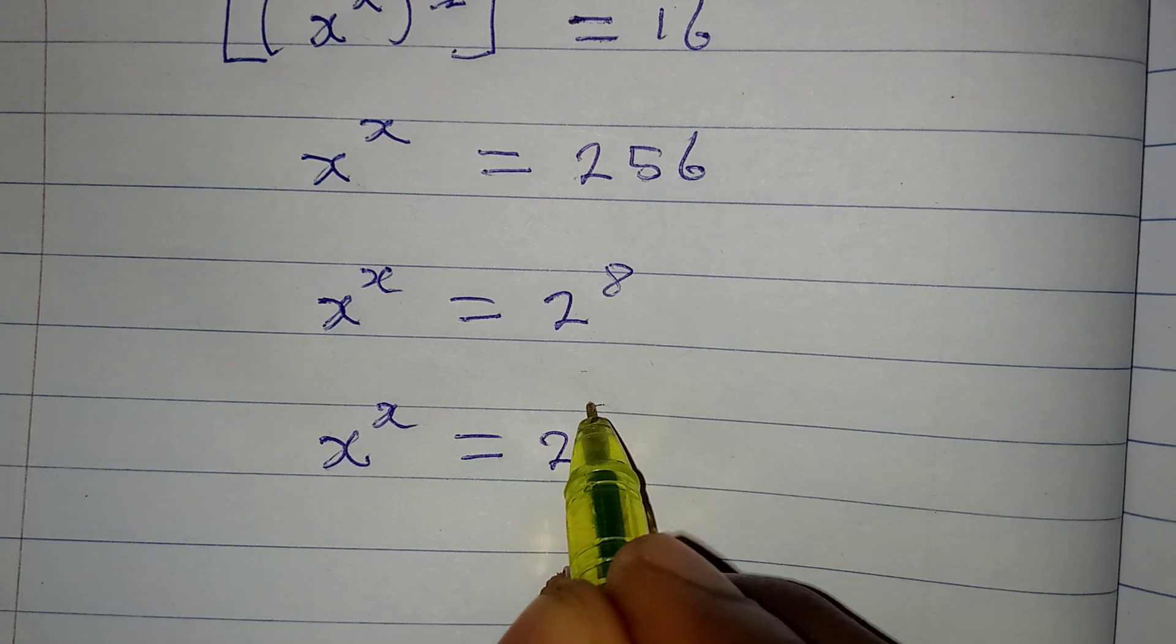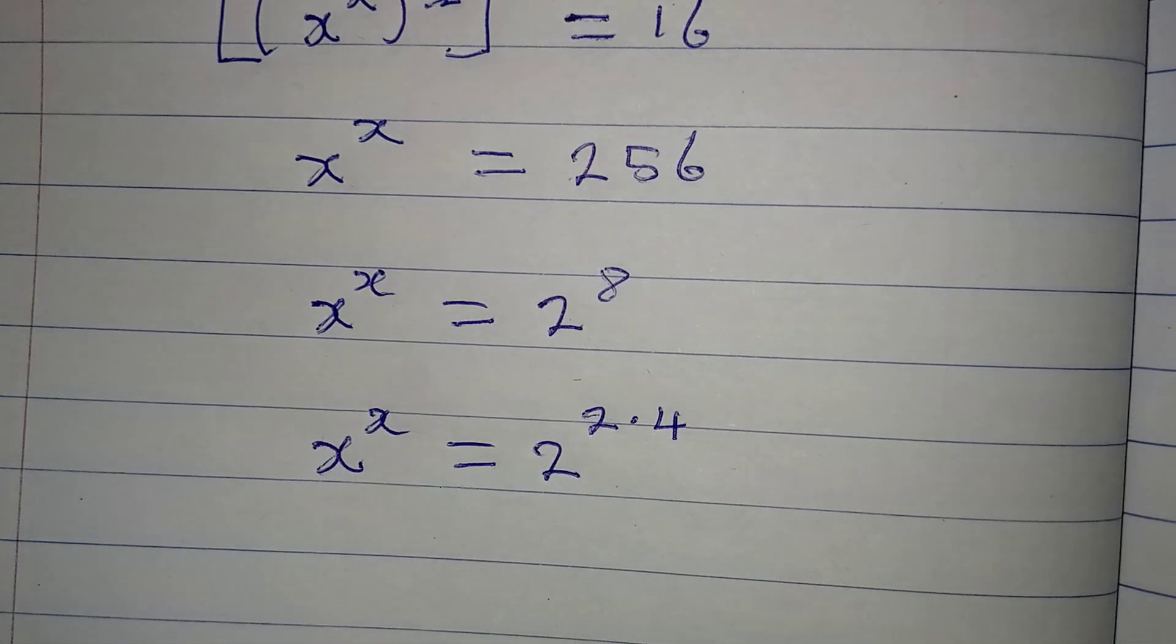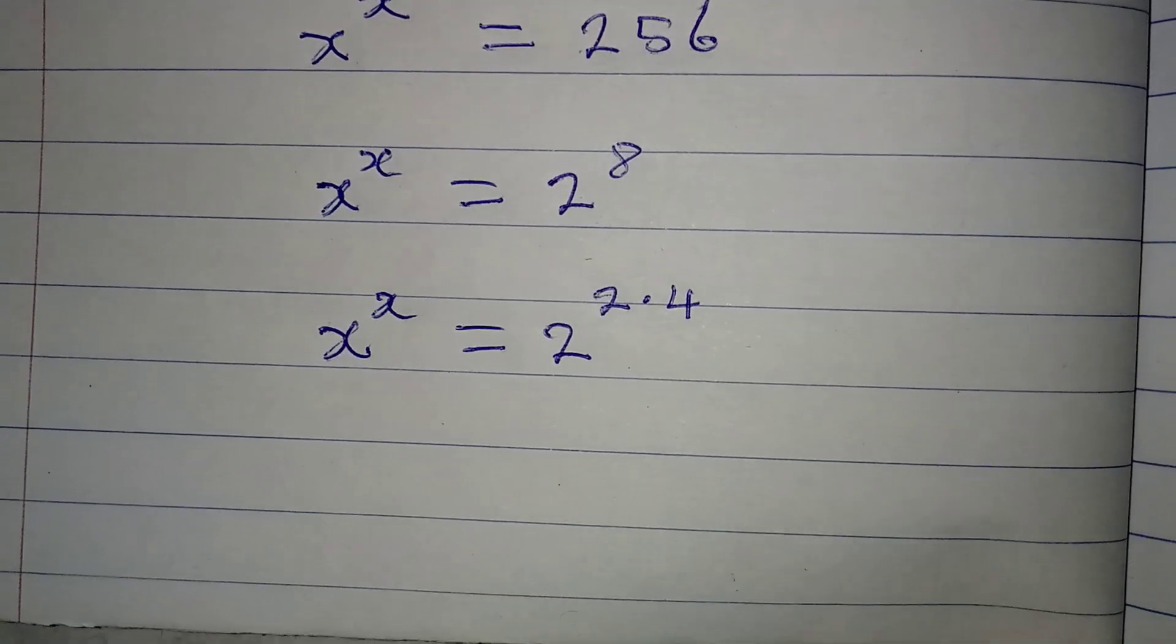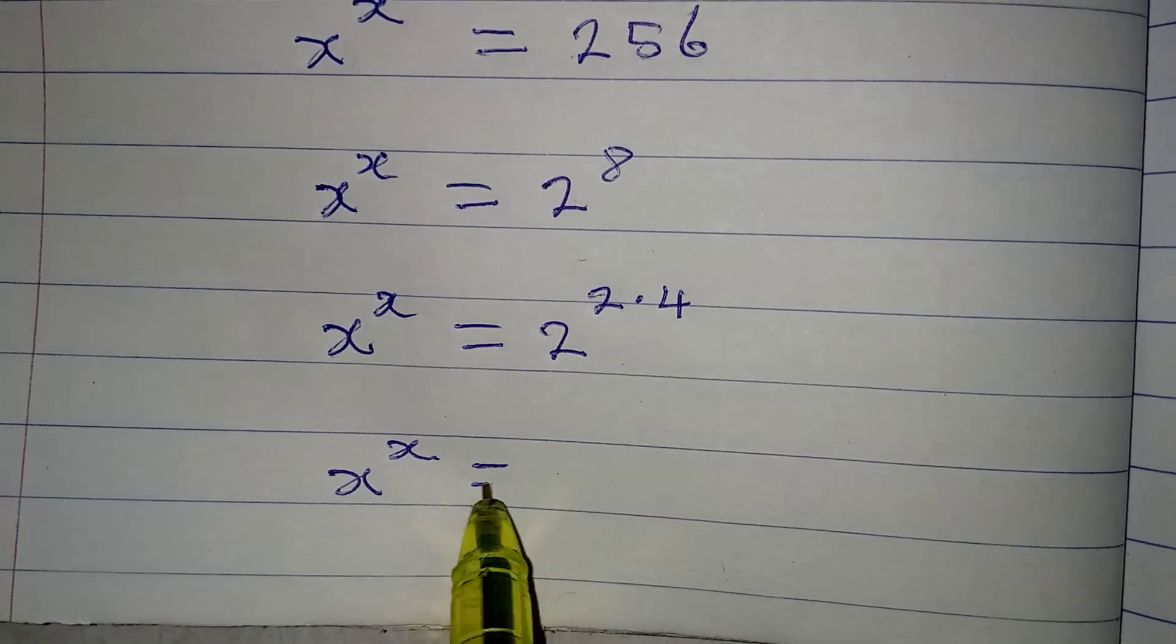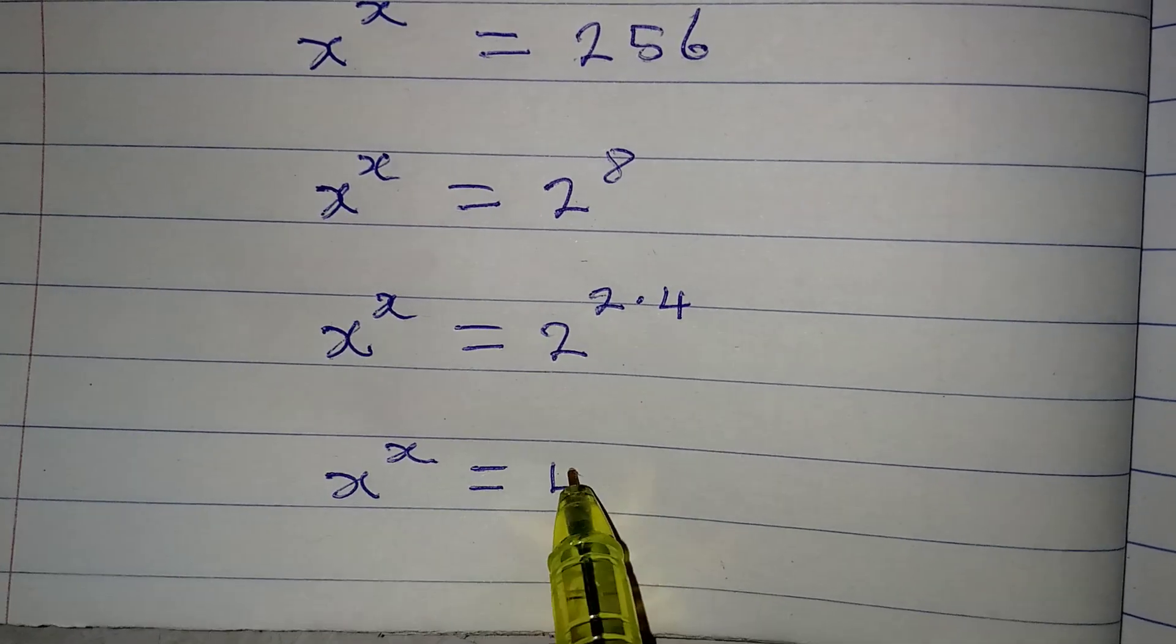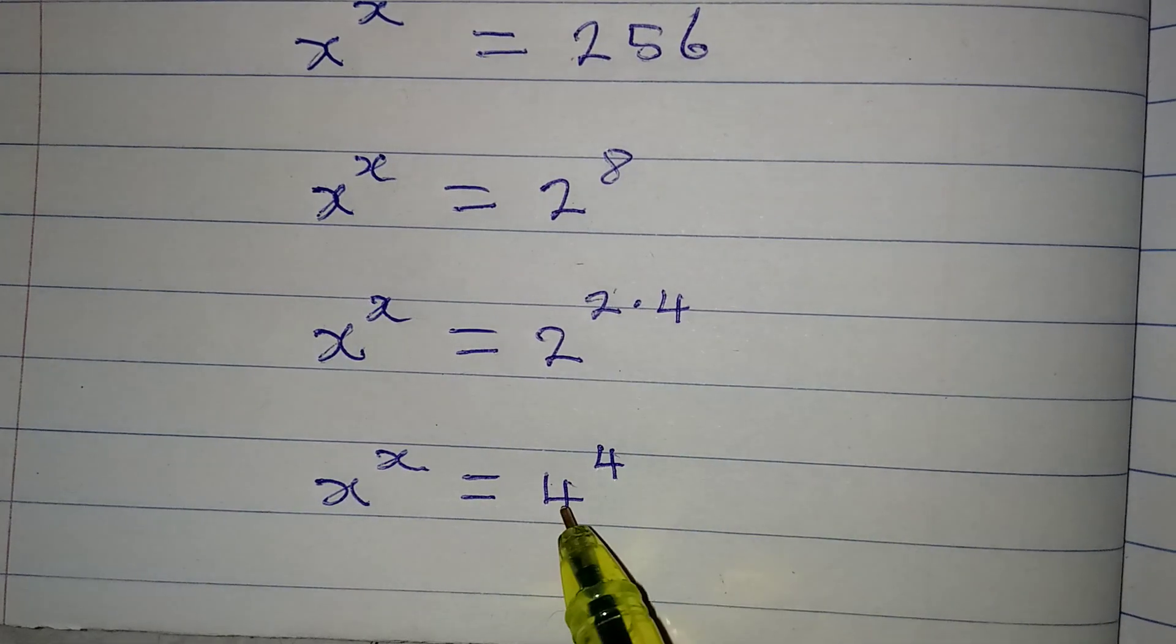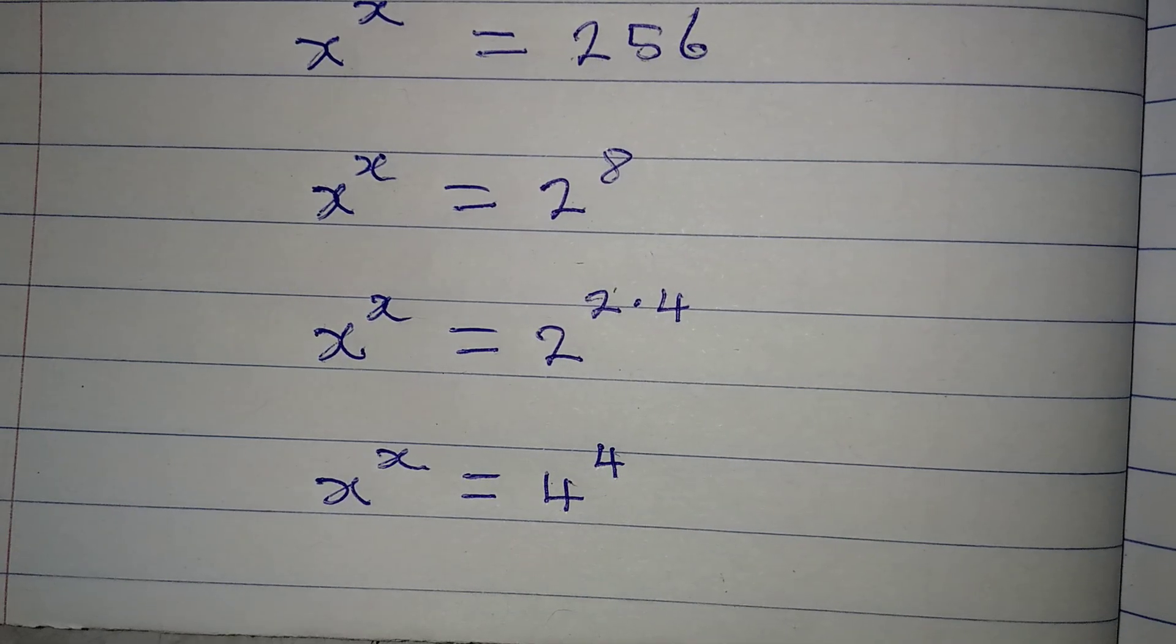Right, yes, because 2 times 4 now will give us 8. Then let's continue so that x to the power of x will be equal to 4 to the power of 4. That is, 2 to the power 2 is 4, and then this power of 4 will still come down.